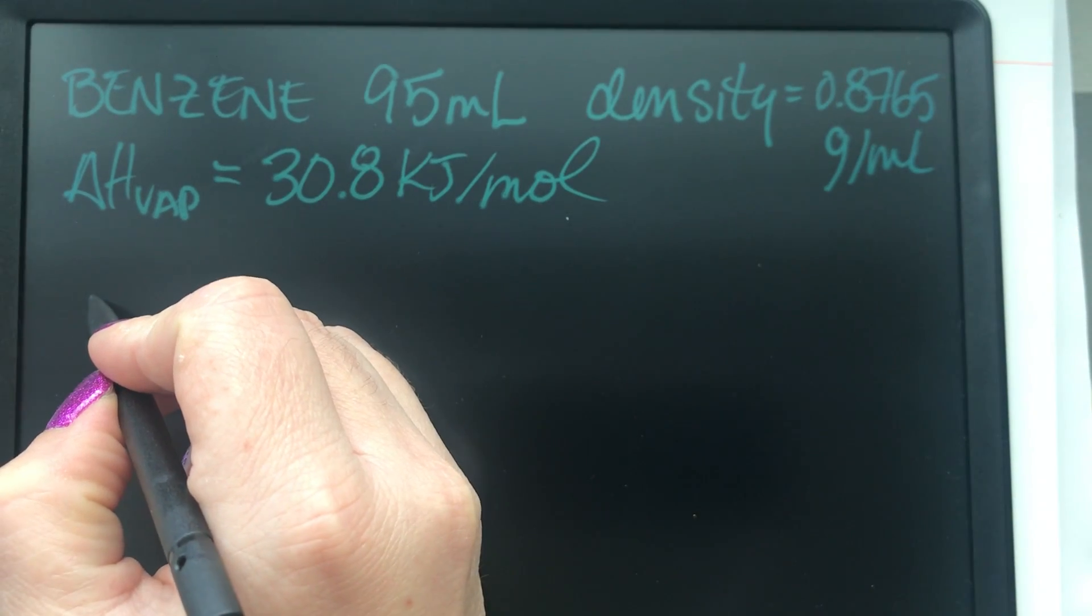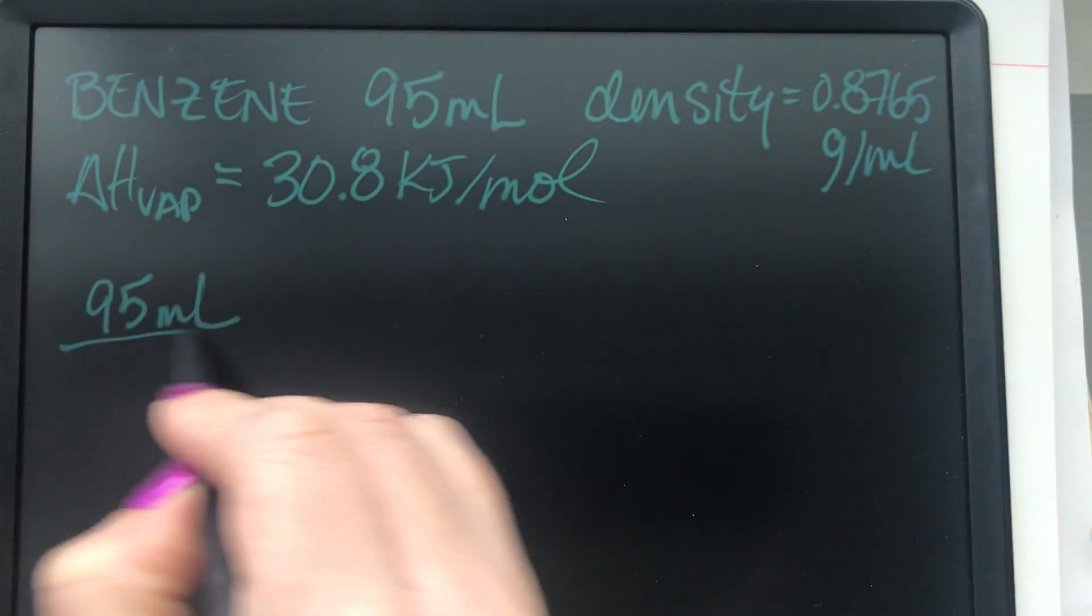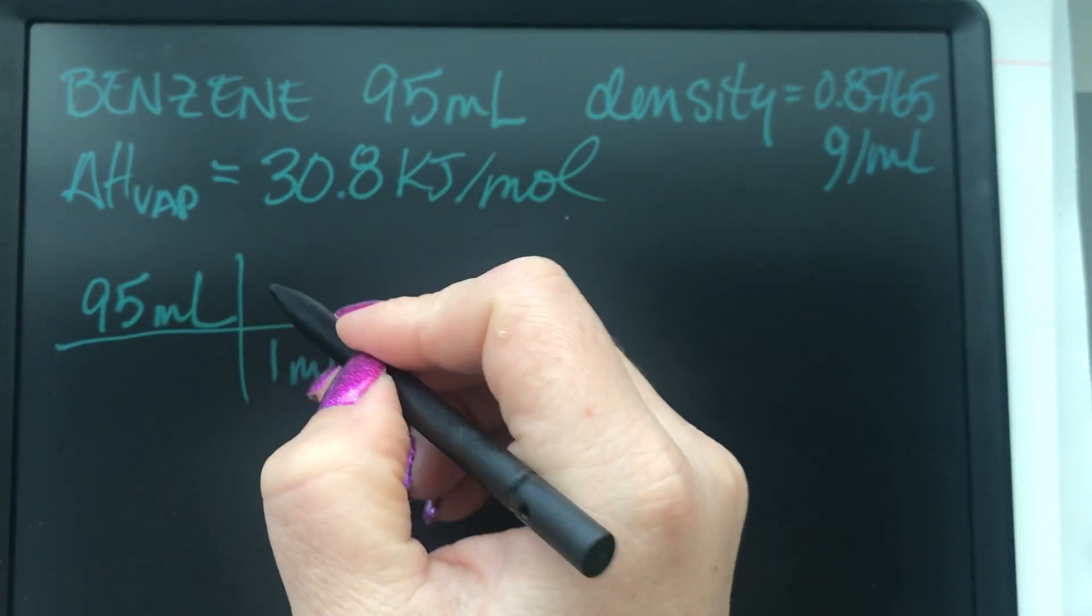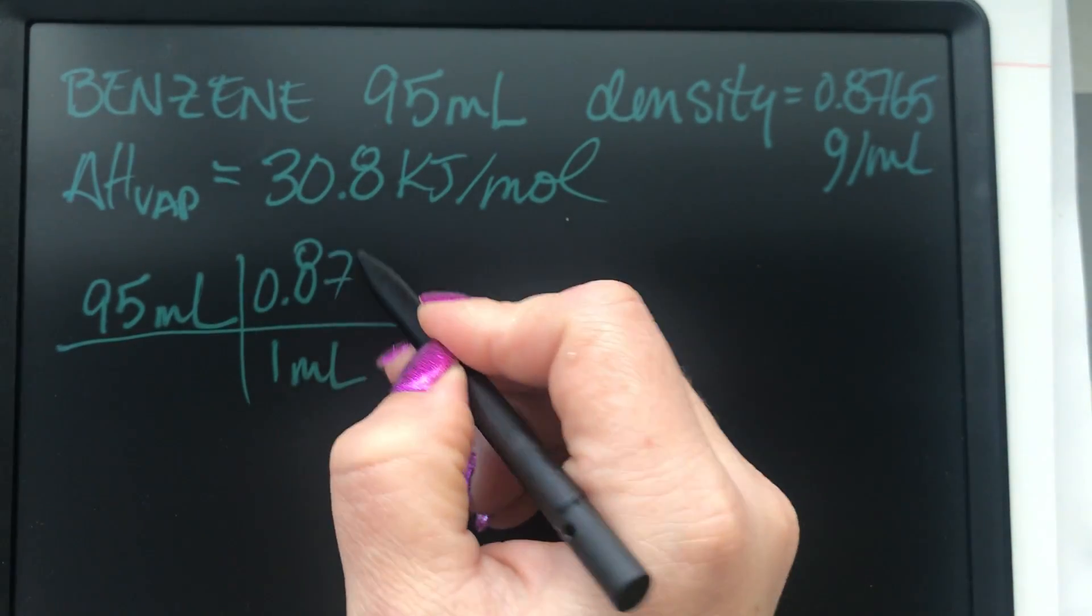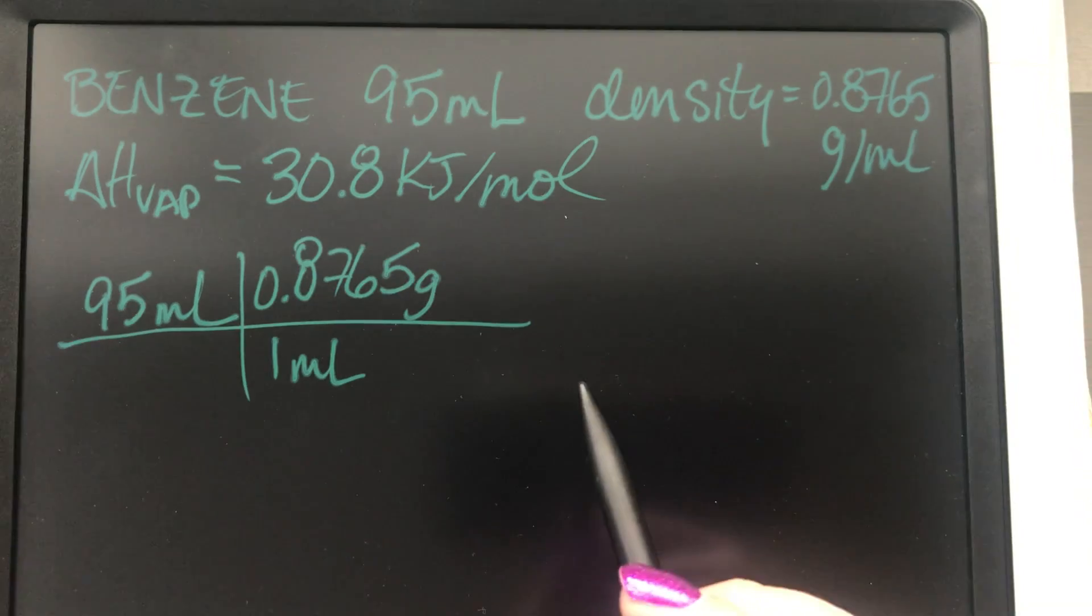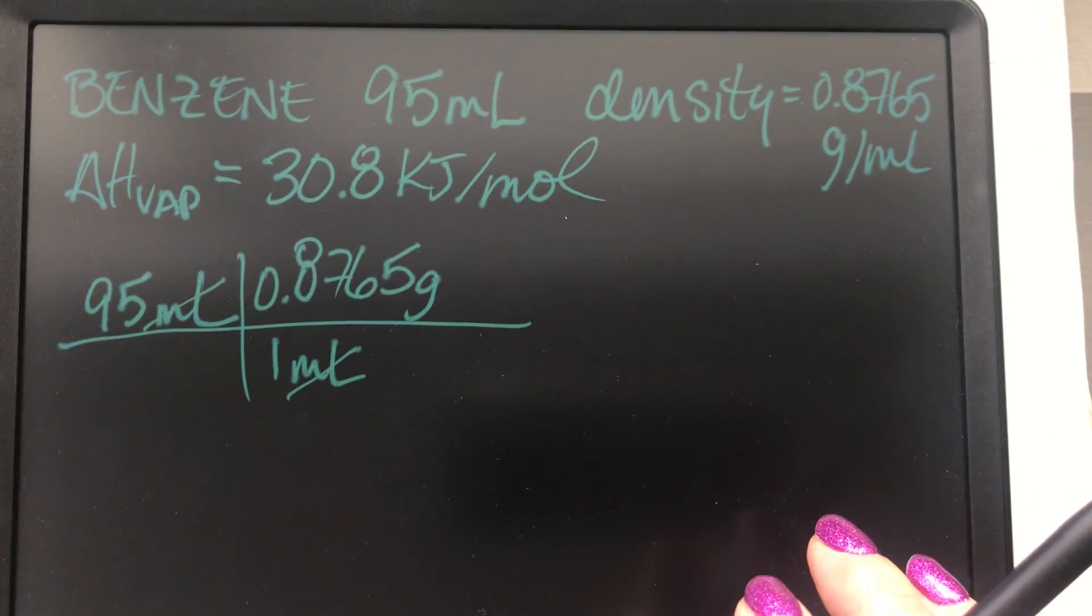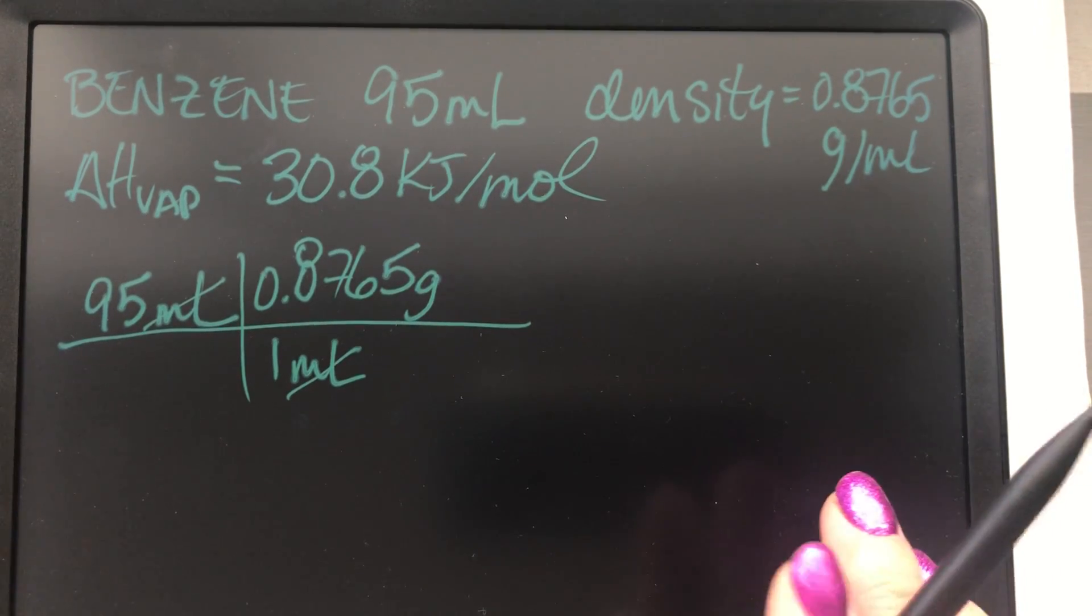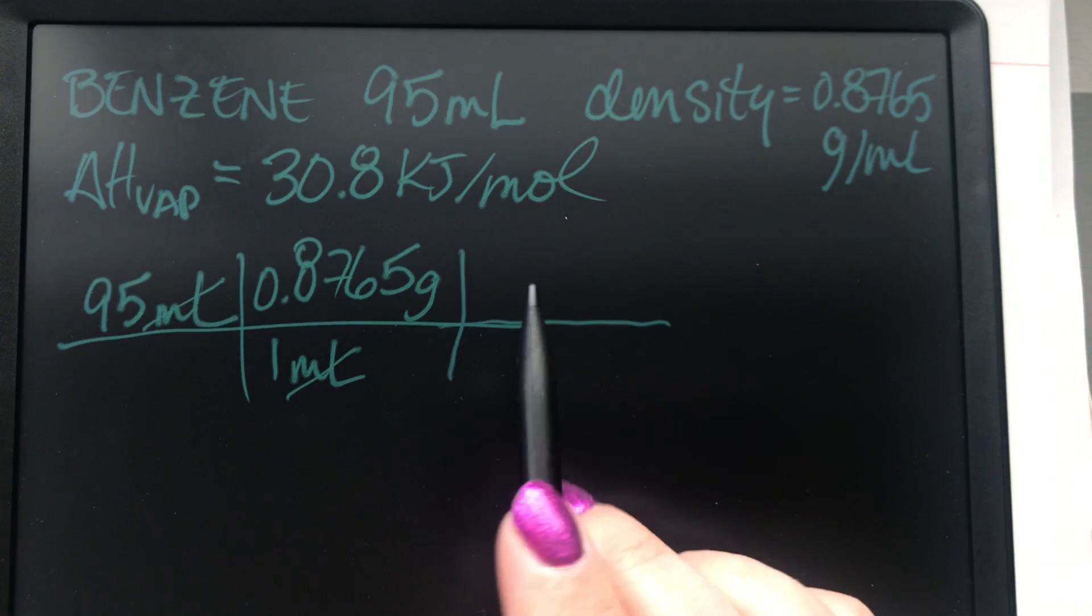So you have 95 milliliters and for every one milliliter of benzene you have 0.8765 grams of benzene, right? So this gets rid of milliliters. What would the next step be? Find the molar mass. Mm-hmm. So we need to cancel grams and get it into moles, right?